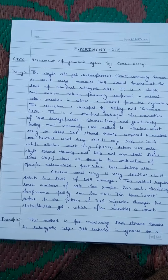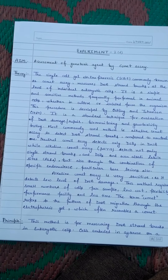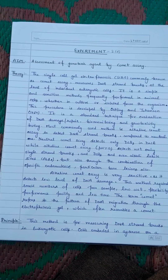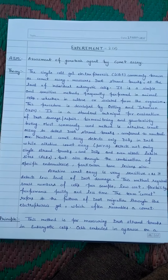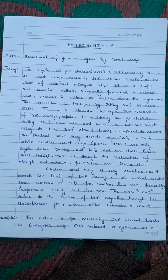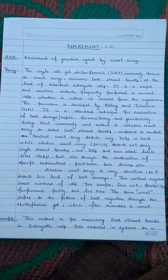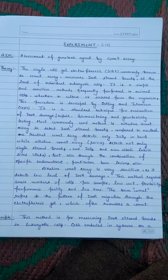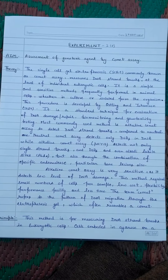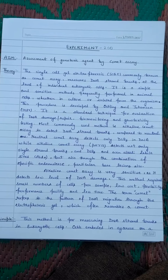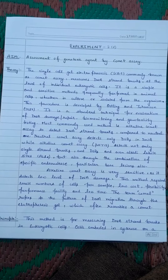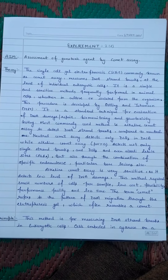Comet Assay is basically used to determine whether there is a split or break in the double-stranded DNA or single-stranded DNA, or whether there is any alkali denaturation or alkali lysis in the DNA. This is determined with the help of the Comet Assay. Comet Assay represents a type of image which looks like a comet — similar to a star. When the image appears like a comet, we can say that our DNA is damaged.